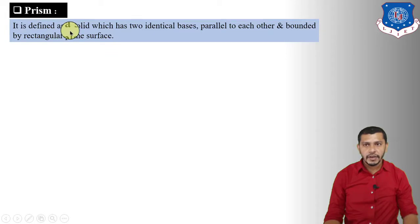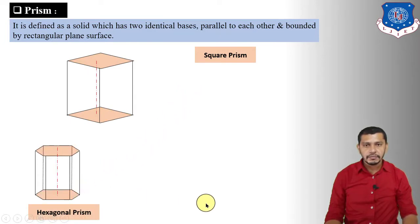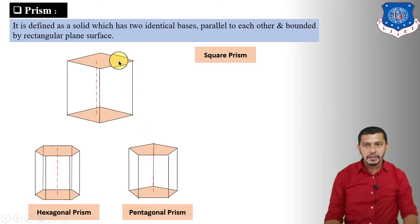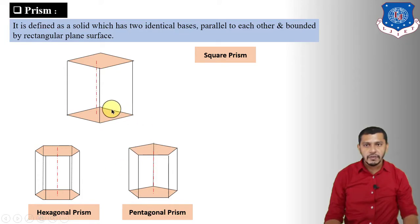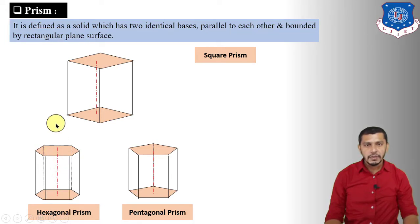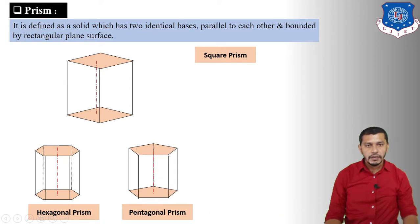A prism is defined as a solid which has two identical bases parallel to each other and bounded by rectangular plane surfaces — like square prism, hexagonal prism, pentagonal prism. If the two identical bases are square, it is a square prism; if hexagonal, a hexagonal prism; if pentagonal, a pentagonal prism.